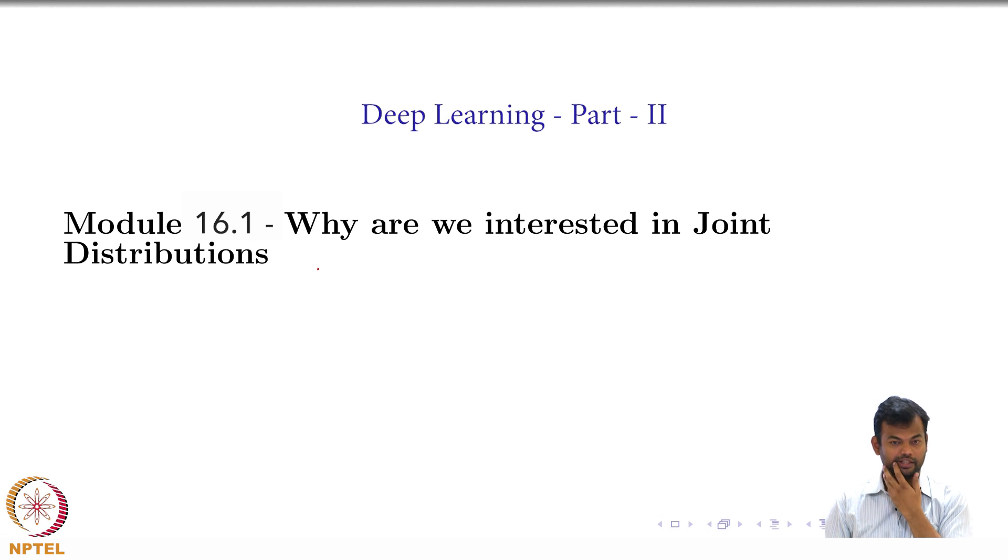I am going to start with this question in the first module. Why are we interested in joint distributions in general? Why do we care about joint distributions? Do you know any real world example where you would want to do a joint distribution? Have you ever come across anything?